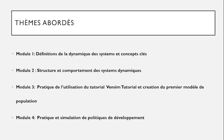Le troisième module sera plus pratique. Nous allons utiliser le logiciel Vensim pour créer notre premier modèle sur la dynamique des systèmes. On a choisi un modèle pour prédire la population d'un pays. À partir de certaines informations sur le taux de natalité et les mouvements des populations, nous allons modéliser et prévoir la population future d'un pays donné et représenter l'évolution de cette population.